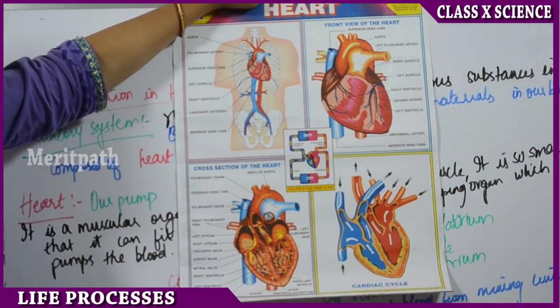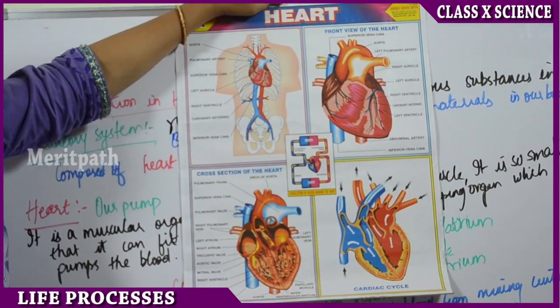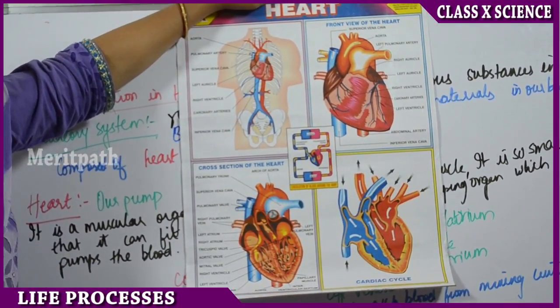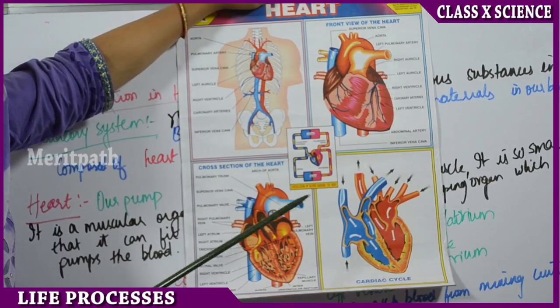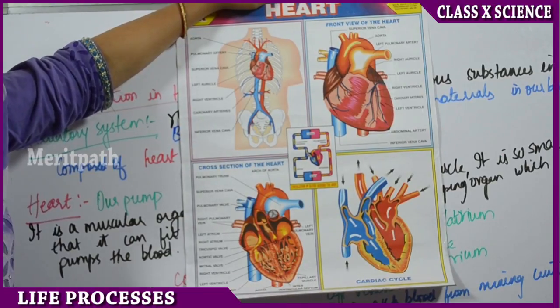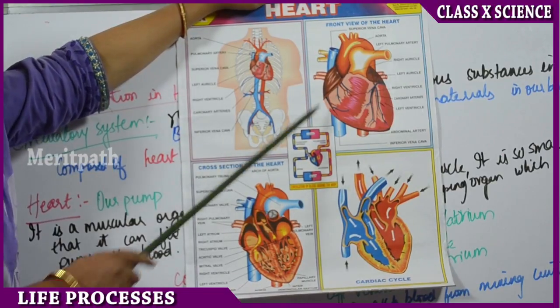The circulatory system is composed of the heart, arteries and veins, which are together known as the blood vessels and blood capillaries.